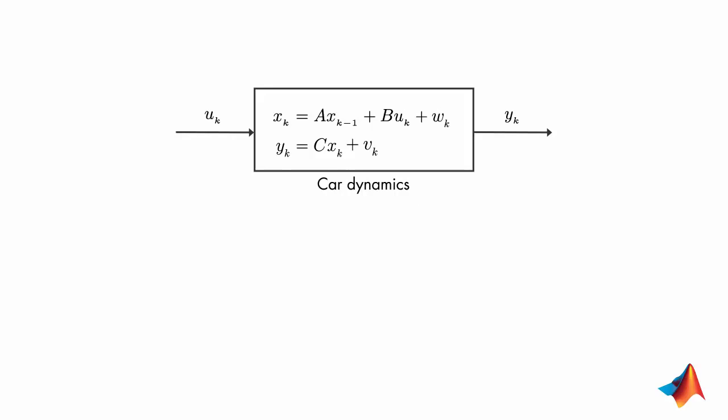If we know the car model, we can run the input through it to estimate the position. But this estimate also won't be perfect because now we're estimating x, which is uncertain due to the process noise.